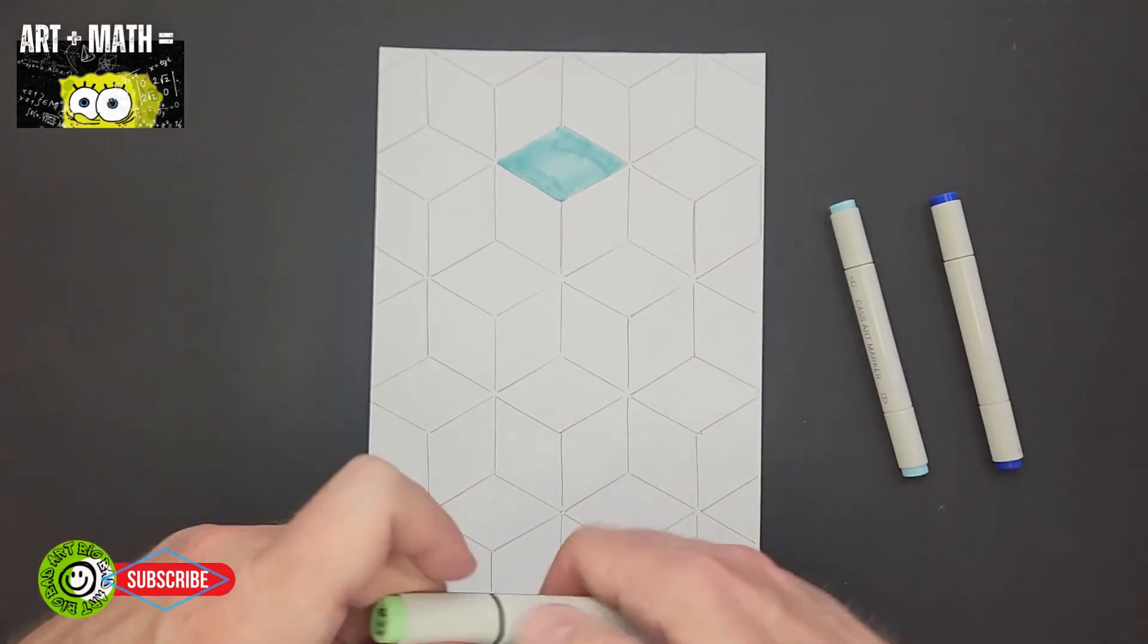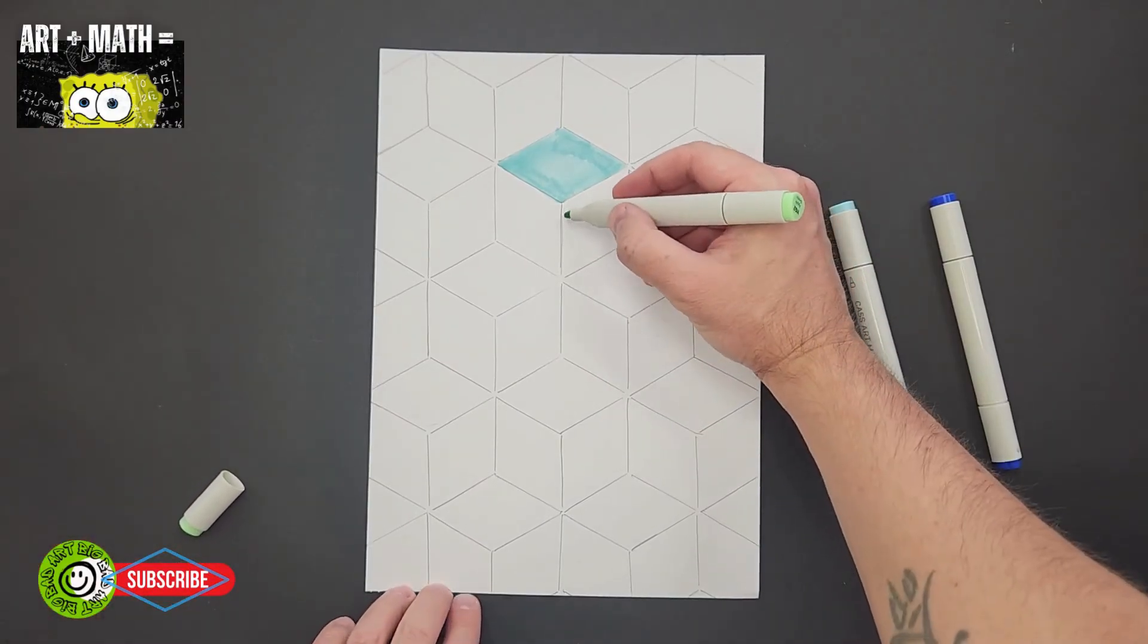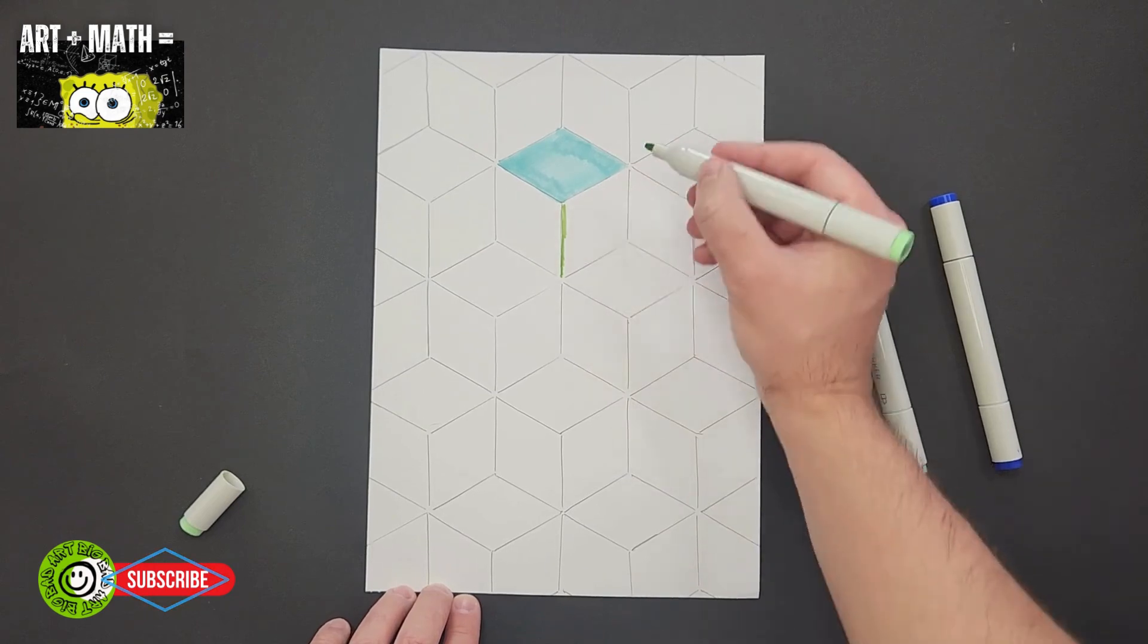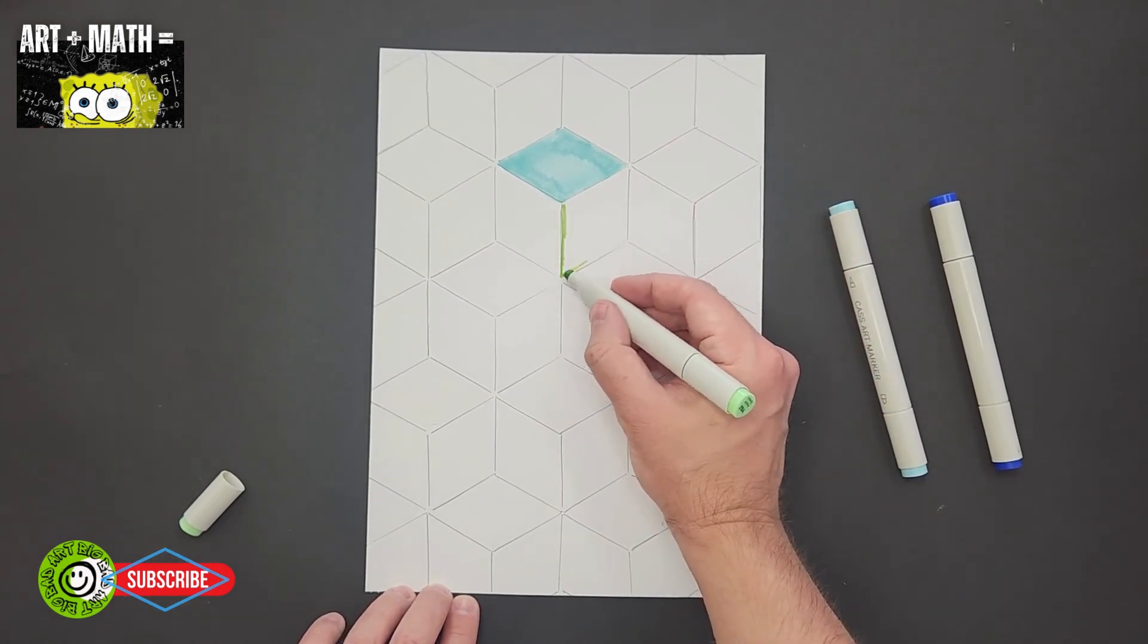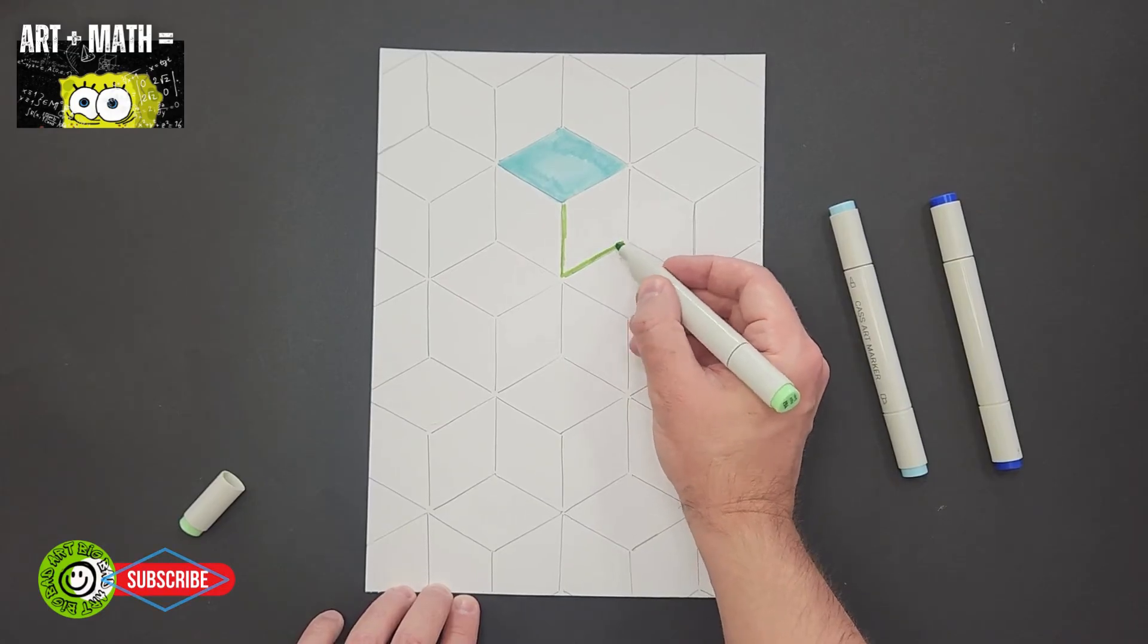I'm going to use apple green. You need to color the side rhombus. So this is going to be color coordinated.